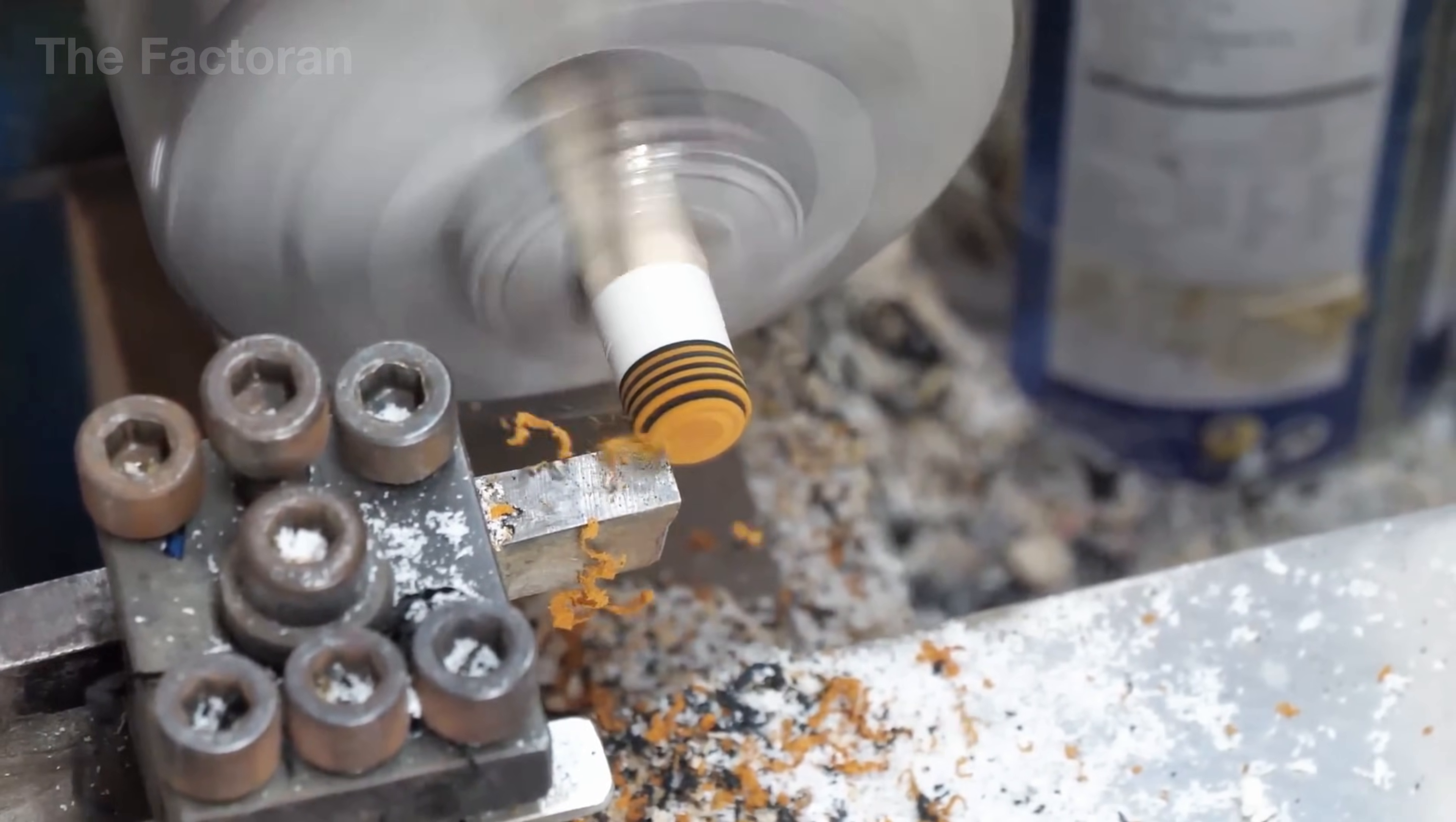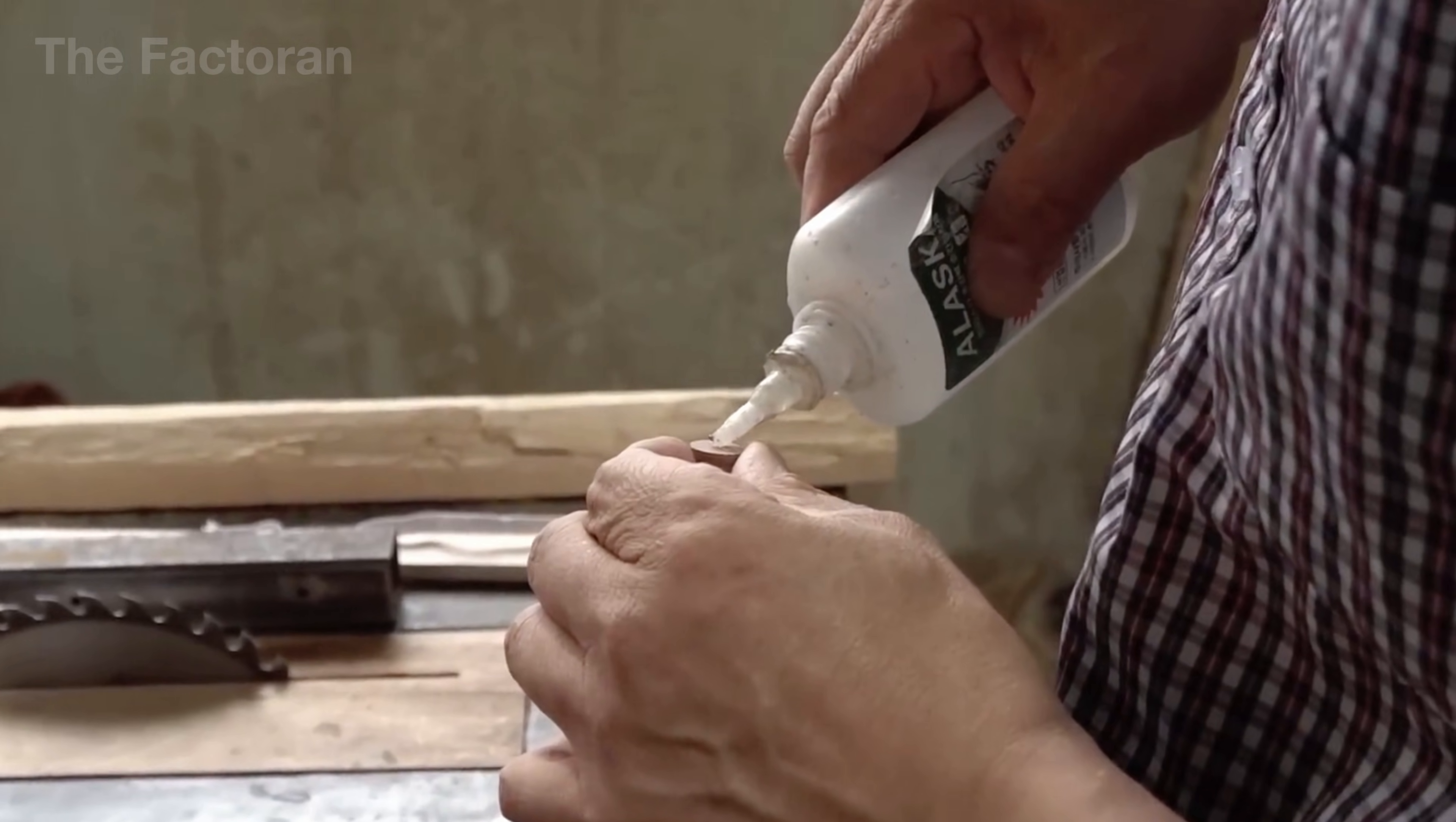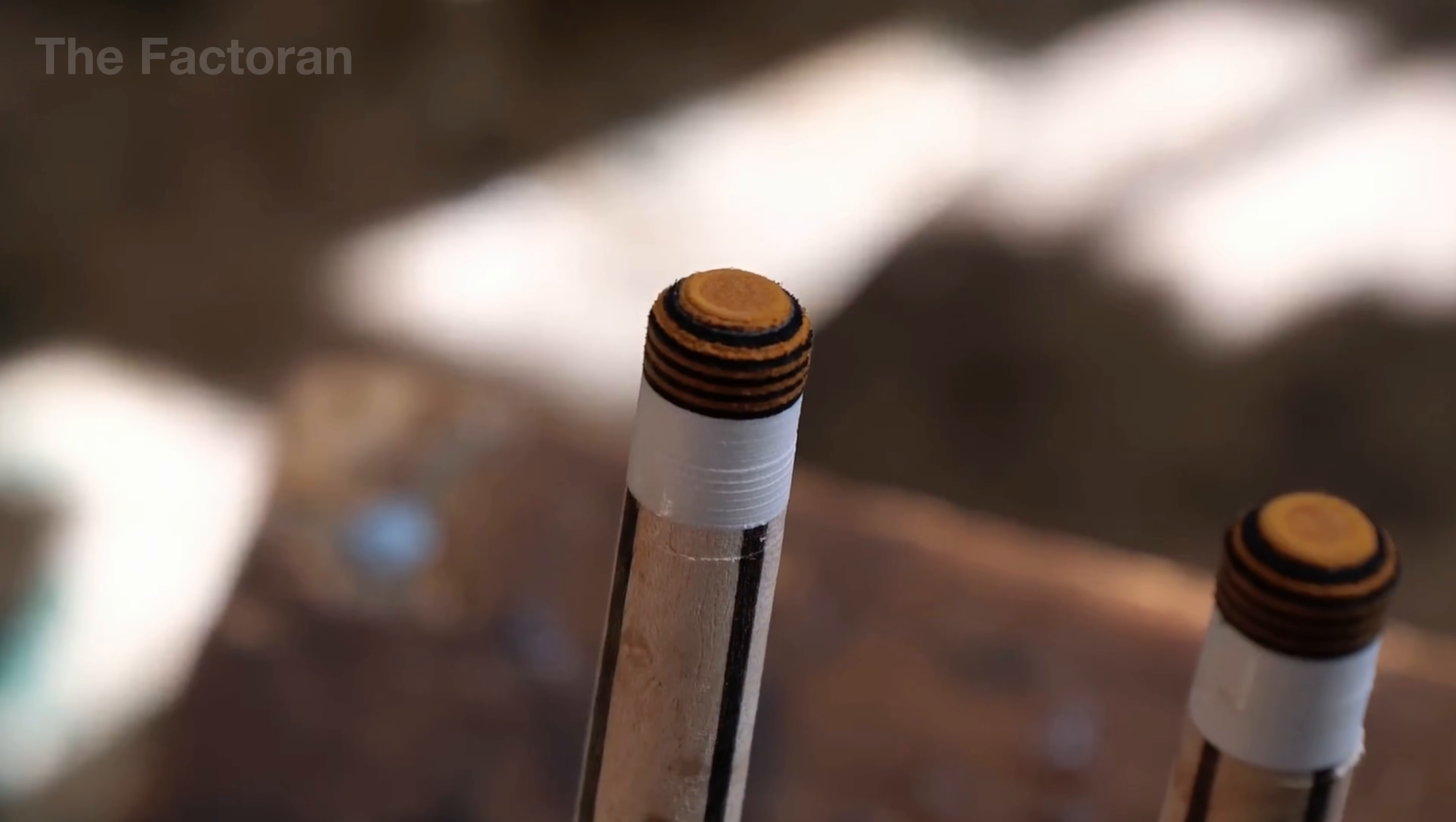In some other factories, the ferrule is driven directly onto the end of the shaft, using controlled hammer force and bonded with epoxy adhesive to form the connection. After that, the entire tip area is placed on a lathe, where it is precisely turned down and shaped into the hemispherical profile required by customer specifications.